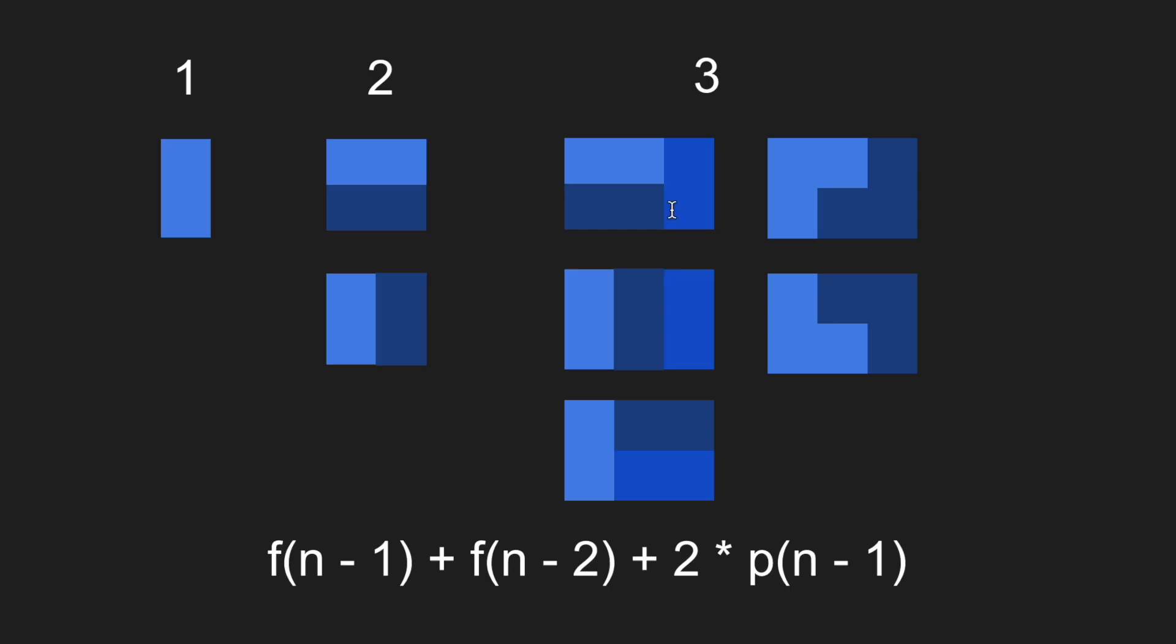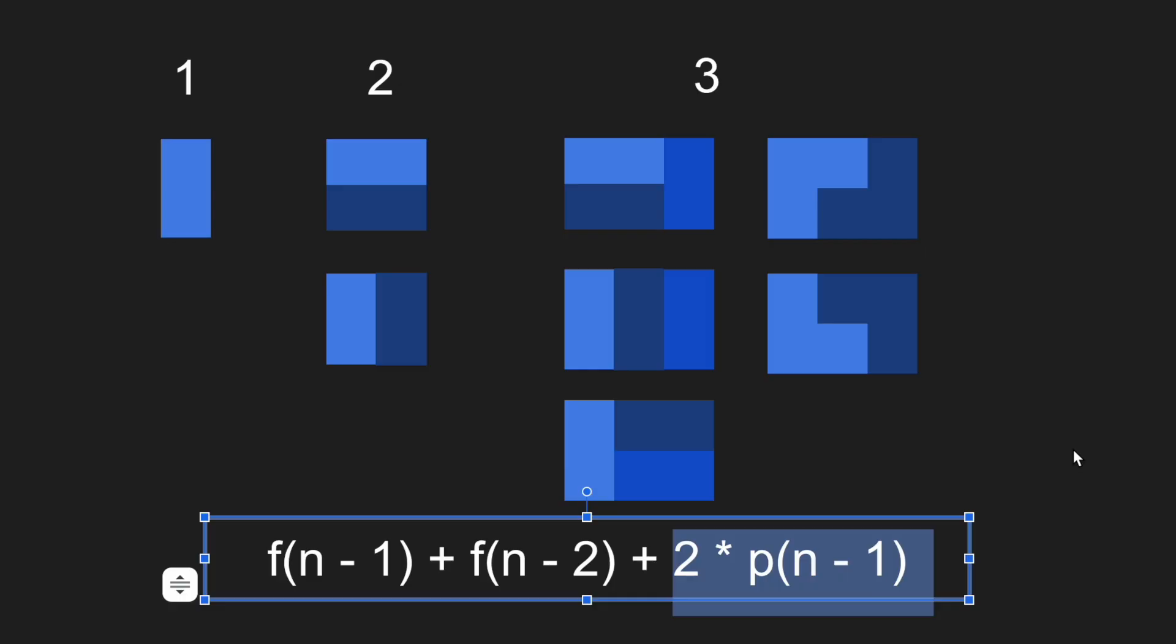So that is why this is the recursive case. So now if we look here, using this formula, when n is equal to three, f of n minus one is basically f of two. And as we can see, based on these two, we can just add one vertical domino to it. And f of n minus two is basically f of one, which is right here. And we just add two horizontal dominoes. And then the p where it is partially filled column will be right here, covering this case right here.